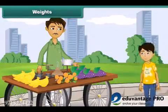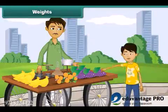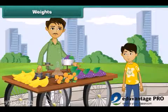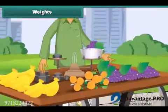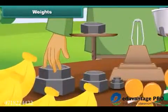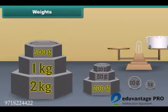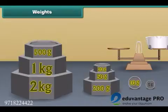When we go to a fruit seller, he uses different types of weights to balance the required amount of objects. Some weights used to measure are 2 kg, 1 kg, 500 grams, 200 grams, 50 grams, 20 grams, 10 grams, and 5 grams.